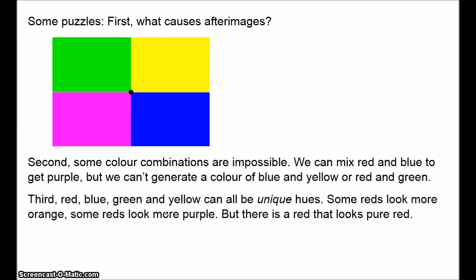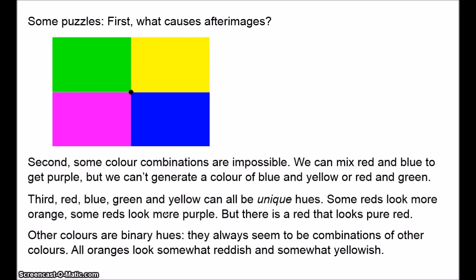Third, some colours are unique hues. Examining various reds, some look more orangey, some more yellowish, some more purplish — but there is a red that looks just pure red, with no yellowish or bluish component. The same is true for blue: there is a blue that looks pure blue. On the other hand, some colours appear only as combinations: orange always looks somewhat yellowish and somewhat reddish; purple always looks somewhat reddish and somewhat bluish. Red, yellow, green and blue can all be unique hues, and all other colours seem to arise out of combinations of these, or combinations with white and black.